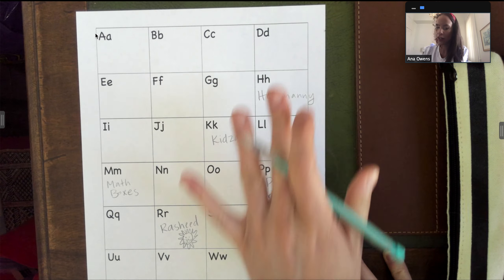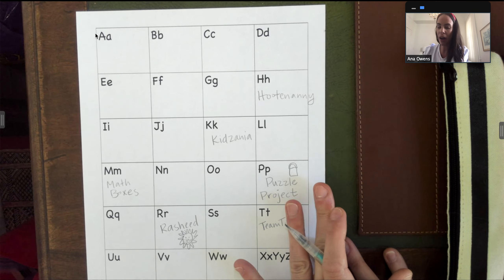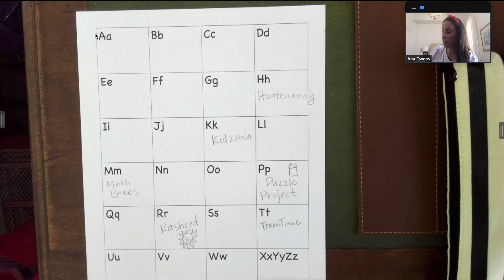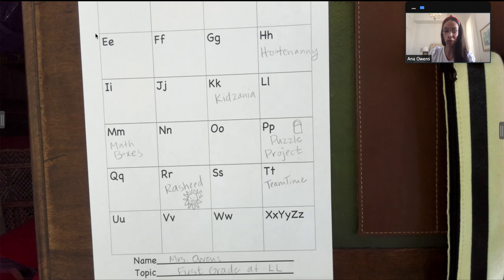You are going to try to fill up all of these boxes with different first grade memories. You can draw little pictures afterwards. You can decorate. If there's some letters where you just can't think of something, that's okay. But just try your best and post it on Seesaw for your teachers to see when you're done.